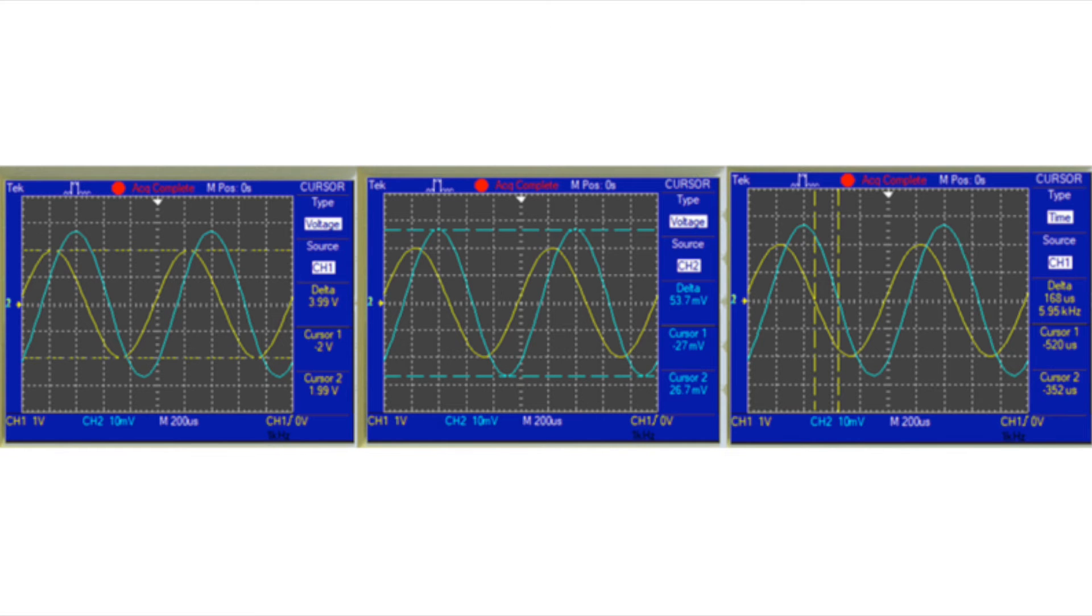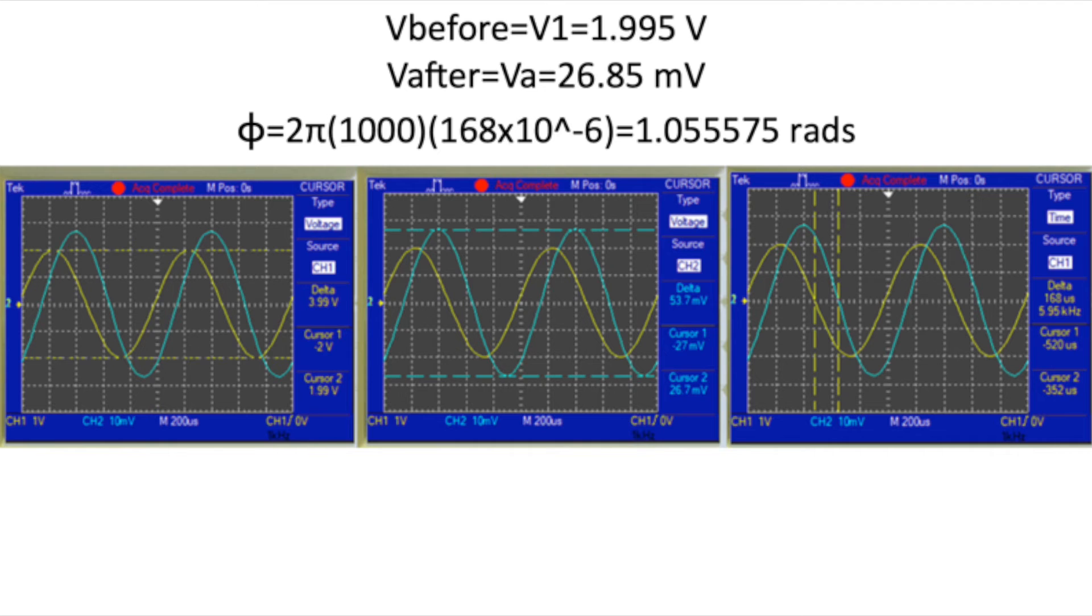Again, in the left screenshot, I'm measuring the amplitude of the voltage before the load network. In the screenshot in the middle, I'm measuring the voltage after the load network, and in the screenshot on the right, I'm measuring the time difference between the two voltages. With this information, we get a power factor of roughly 0.482, so I would say that the capacitor definitely did something.